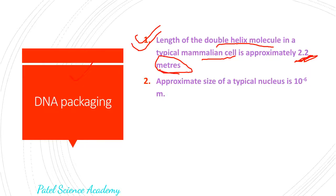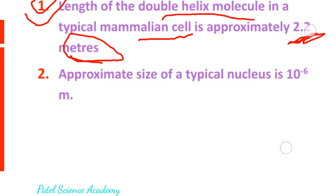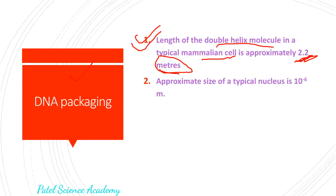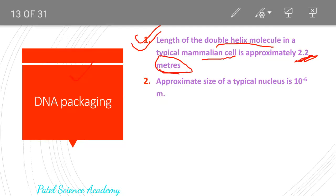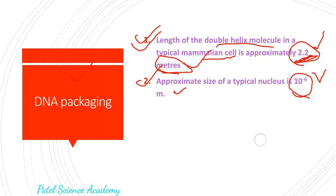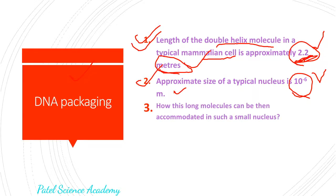The approximate size of a typical nucleus is 10 raised to the power minus 6 meters. So this is the size of a typical nucleus, and what is the size of the DNA? About 2.2 meters. So there is a big difference between 2.2 meters and 10 raised to the power minus 6 meters. Then we'll see the next point — how this long molecule can be accommodated or fit into such a small size of nucleus.